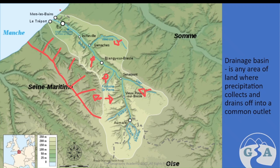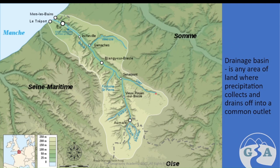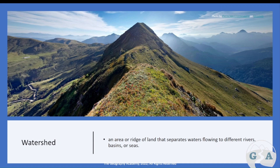Each drainage basin usually has an area where the water meets the sea or ocean, or an entry into another water body. There are multiple drainage basins — many can be seen even within this one area of the map in France. A watershed divides a drainage basin: anything that rains on one side flows into that drainage basin, while rain on the other side flows into the adjacent one. The watershed is the line that divides them.